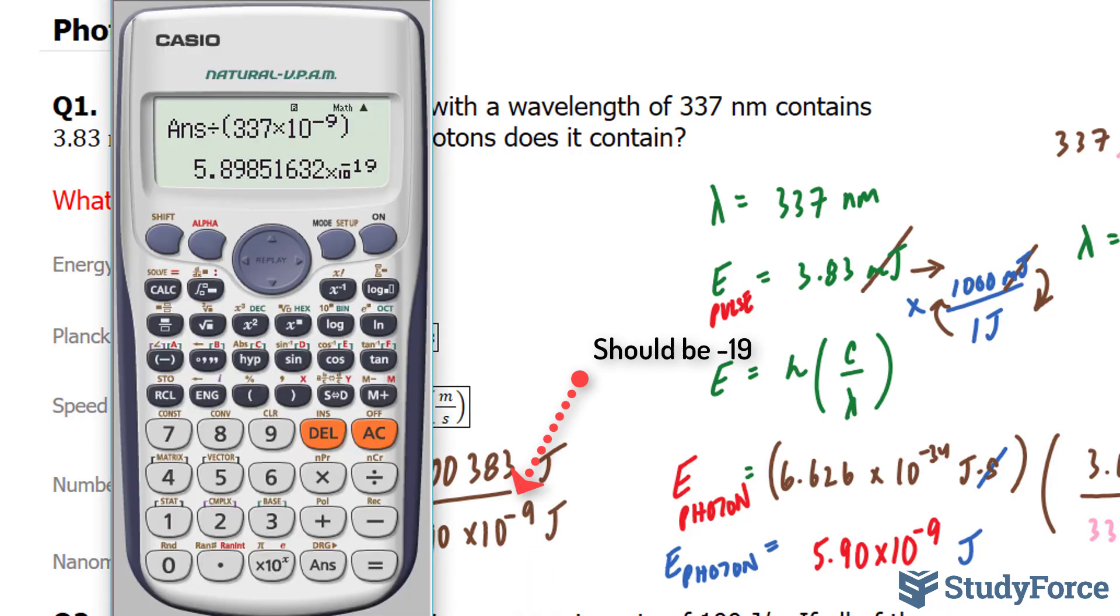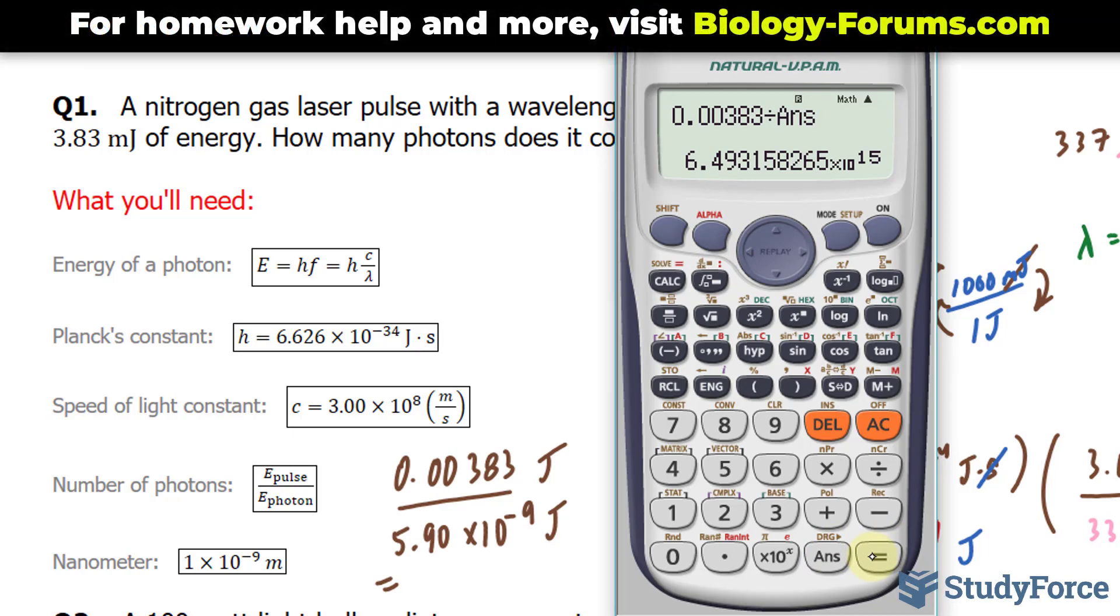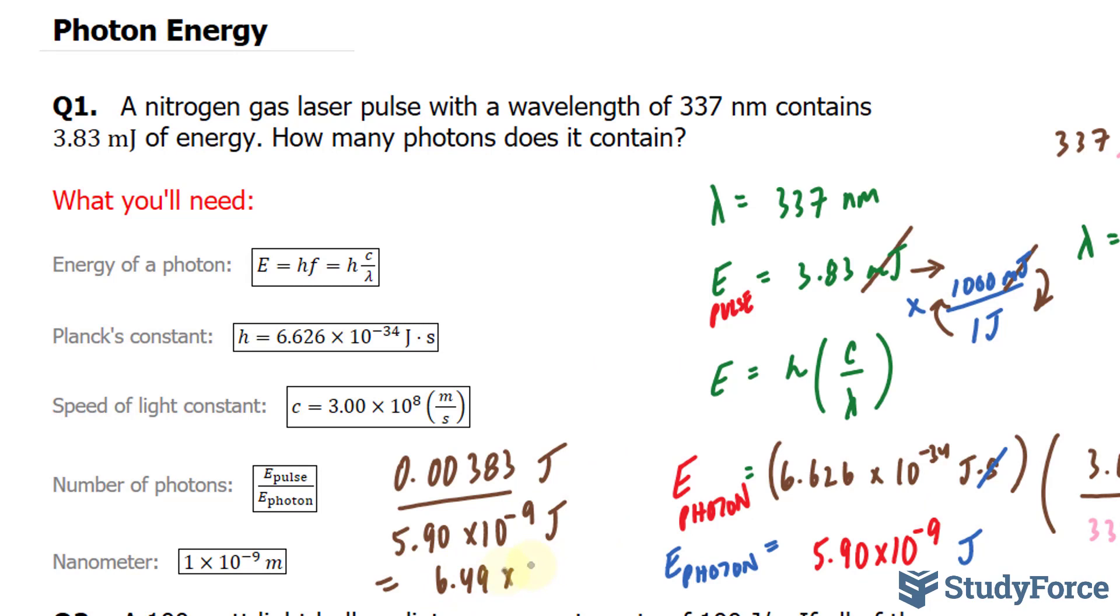Let's use our calculator. I'll keep these numbers for the sake of this calculation just to prevent any sort of rounding error. So I have 0.00383 divided by the answer that I just found. We end up with 6.49 times 10 to the power of 15. This needs to be to 3 significant figures. So 6.49 times 10 to the power of 15 photons. This is the amount of photons in this pulse of light.